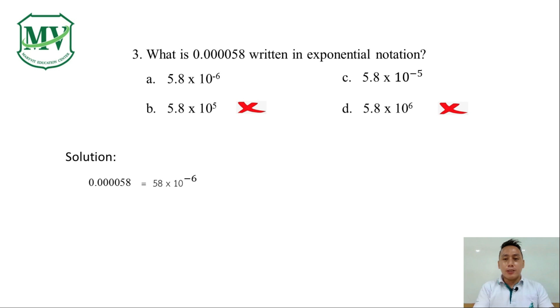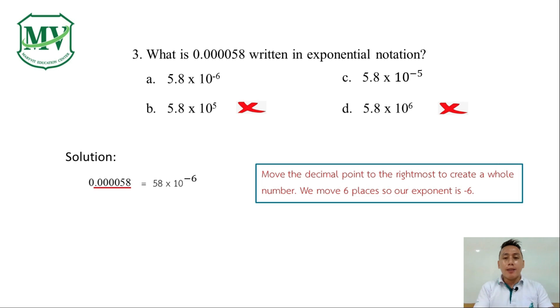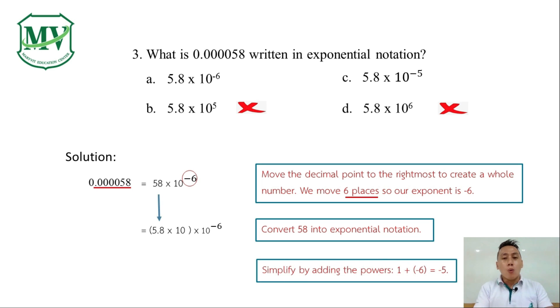We can do this by moving first the decimal point to the rightmost of the number to create a whole number. We move 6 places so our exponent will be negative 6. Then convert 58 into exponential notation. And finally, simplify by adding the exponents. 1 plus negative 6 is negative 5. So our final answer is 5.8 x 10 raised to the power of negative 5. That's letter C.